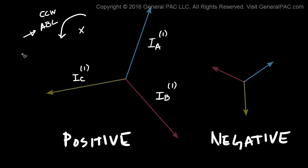The phase sequence of our Positive Sequence Component and the phase sequence of our system should be the same. Which means that if we have an A, C, B system, then our Positive Sequence Component is going to be A, C, B. So just keep that in mind.